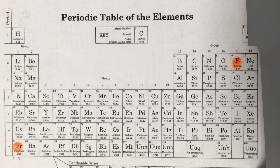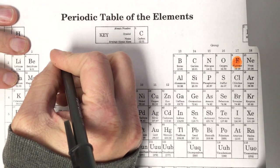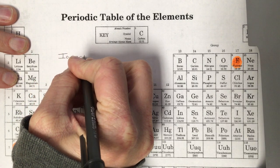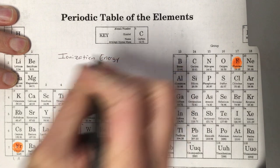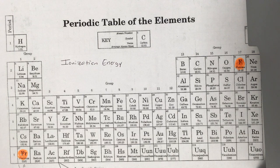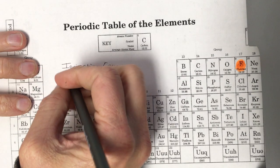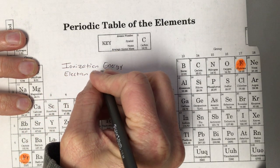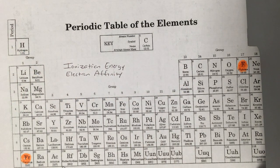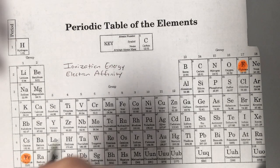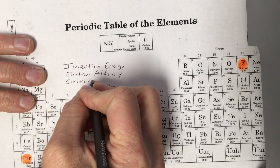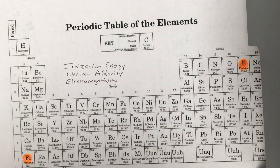The periodic trends involve three key concepts. We have ionization energy — the energy that has to be absorbed by an atom to free or liberate its valence electrons. Electron affinity, which is the amount of energy released by a non-metal when it gains an electron; non-metals get an opportunity to unload excess energy, making them more stable. And electronegativity, which is the tendency of an atom to draw electrons towards it in a covalent bond.